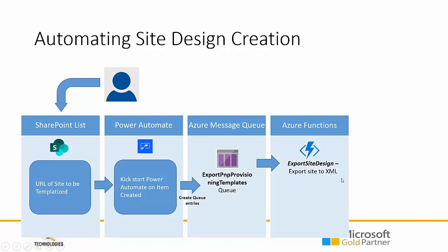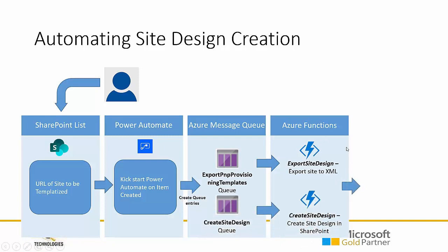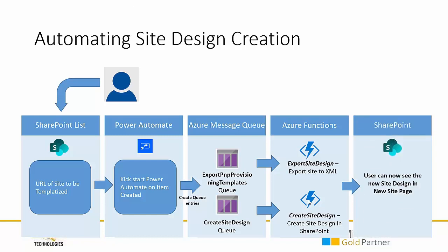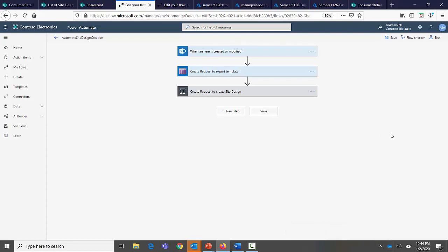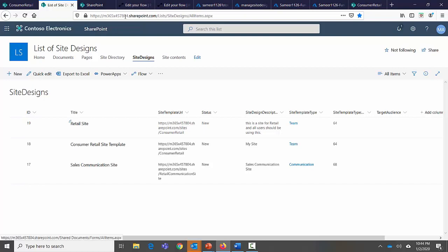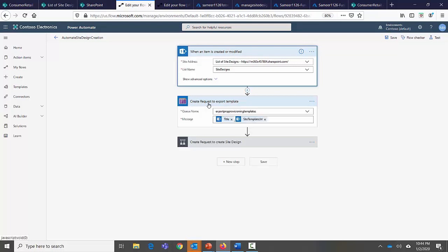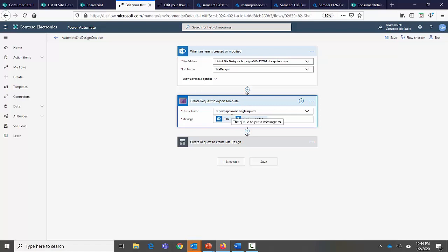The Azure function then exports the whole site into an XML file, which is used when users provision sites from the site design — covered in part one. The flow triggers on item created or modified, creates a request to export the template by passing the site template URL and the site name (e.g., 'Retail Site') to the Azure queue. An Azure function monitors this queue and handles the export.